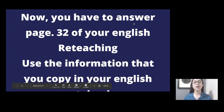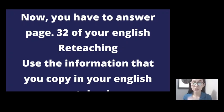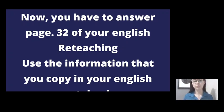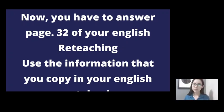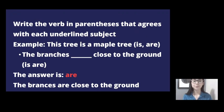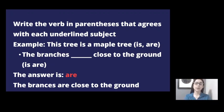Now you have to answer page 32 of your English Reteaching Workbook. Use the information you copied. If you need to read again or rewatch parts of the video, you can do it. Answer page 32 by yourself — I know you're going to do it well. The instructions say: 'Write the verb in parentheses that agrees with each underlined subject.' Example: 'This tree is a maple tree.'